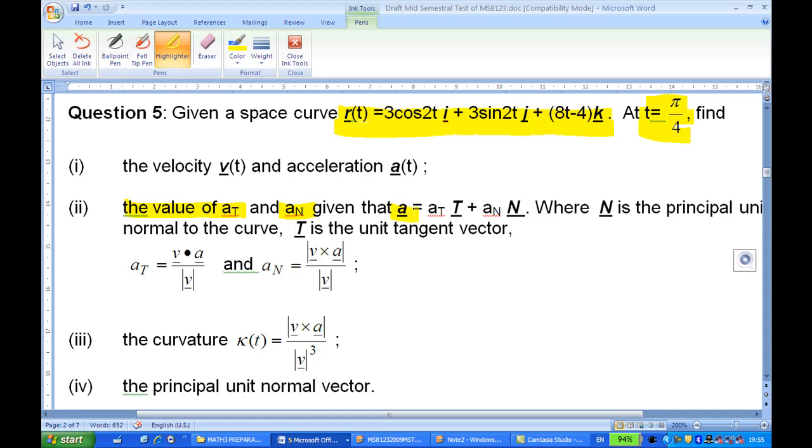Given that A, which is acceleration, equal to At times t plus An times n, where n is a principal unit normal to the curve, and t is a unit tangent vector. How do I find At? At is velocity dot acceleration over the length of v. How to find An? An is velocity cross acceleration, take the modulus, and divide it by the length of v.